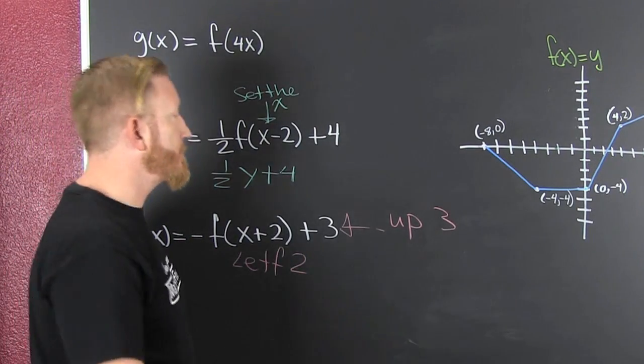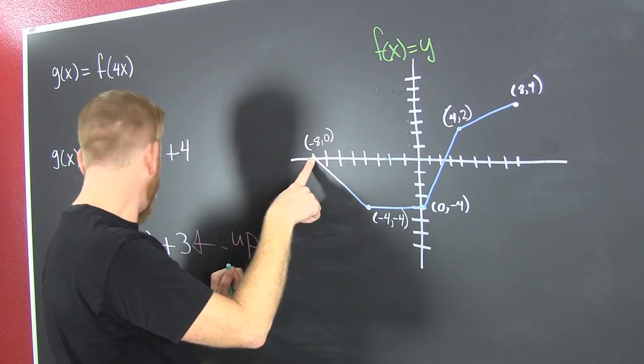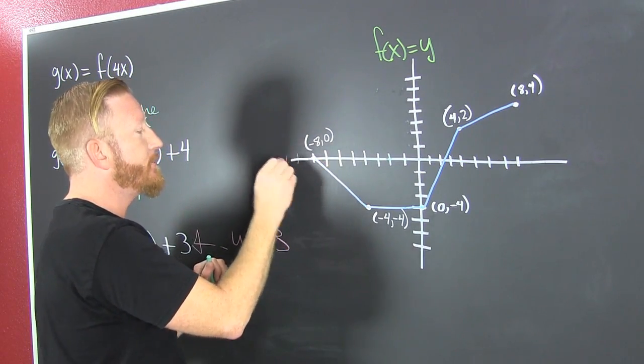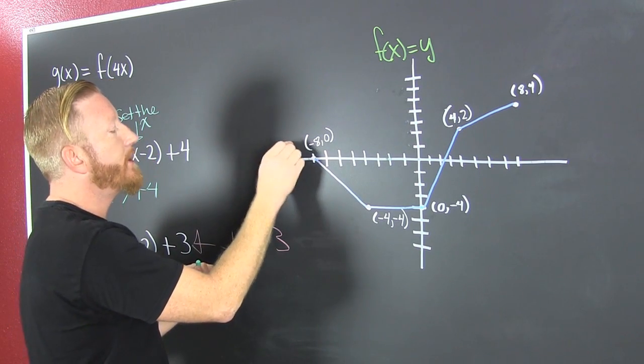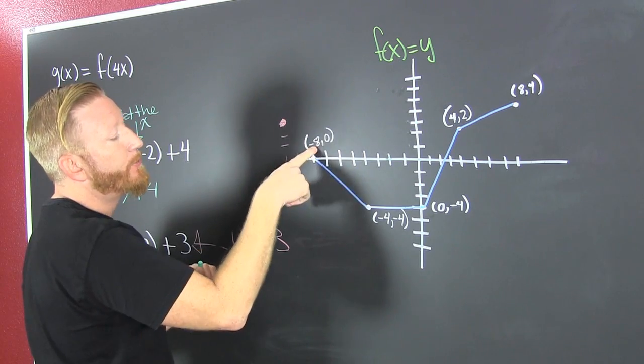We're going to take our y and flip it, but it's at zero, so we're going to stay there. And then we're going to shift that left two units. And then we're going to go up three units. We put a dot. That's going to be our new point for there.